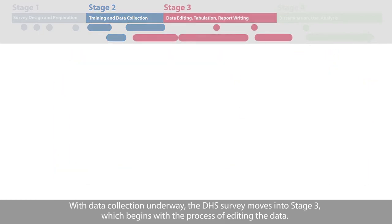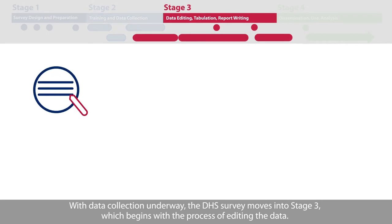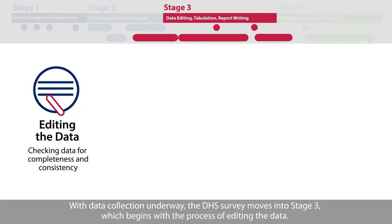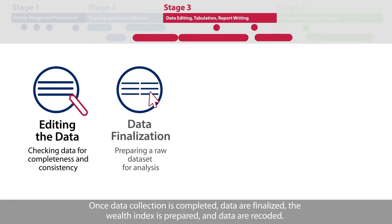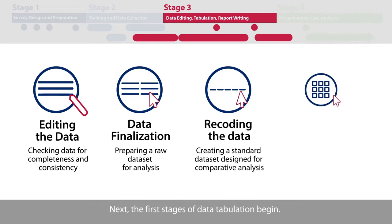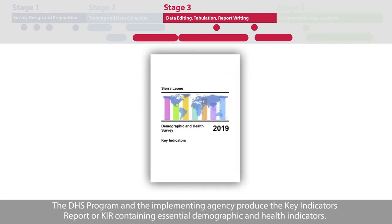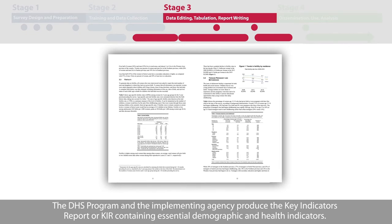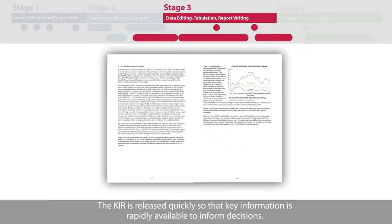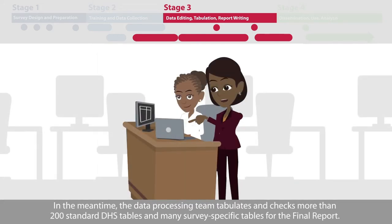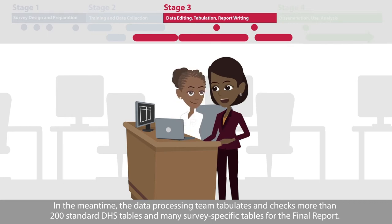With data collection underway, the DHS survey moves into Stage 3, which begins with the process of editing the data. Once data collection is completed, data are finalized, the wealth index is prepared, and data are recoded. The DHS program and the implementing agency produce the Key Indicators Report, or KIR, containing essential demographic and health indicators. The KIR is released quickly so that key information is rapidly available to inform decisions. The data processing team tabulates and checks more than 200 standard DHS tables and many survey-specific tables for the final report.